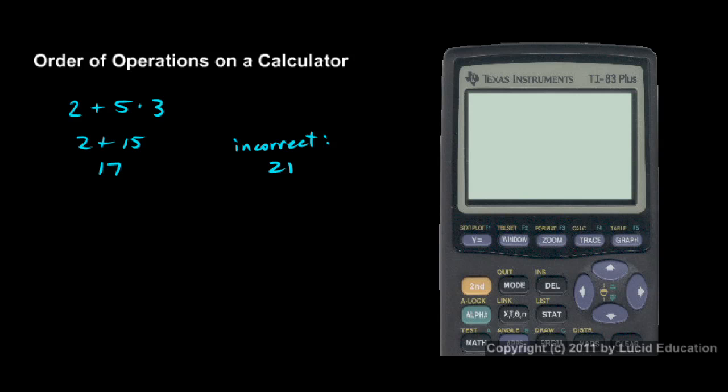Here's mine. When I type 2 plus 5 times 3 and hit enter, it tells me 17. So this calculator is performing the order of operations correctly.